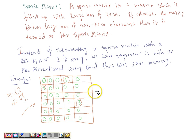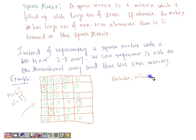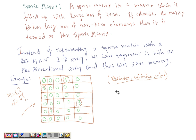In order to represent this sparse matrix linearly with a one-dimensional array, we consider a triplet that stores the row index, the column index, and the value for all the non-zero elements. We represent only the non-zero elements in the one-dimensional array; all zero elements need not be represented at all. We can consider a structure like this to represent this triplet.